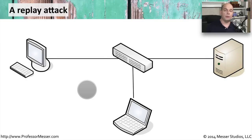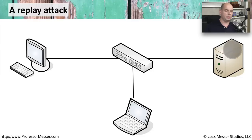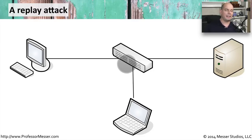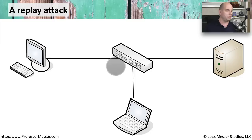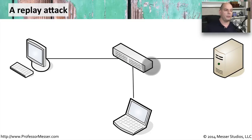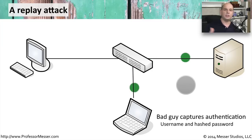Here's an example of how a replay attack might happen. I have me on my system, communicating to a server and authenticating to that device through a switch. The bad guy has gained access to the switch and has told the switch to also send all the traffic down to the bad guy's laptop. I'm going to authenticate to the server, so I'll send my packet through the network and it will then complete its process to the server.